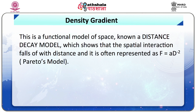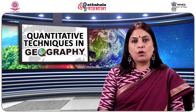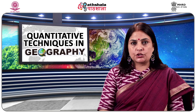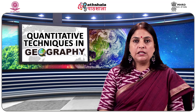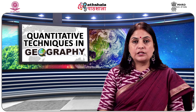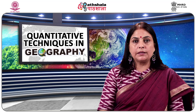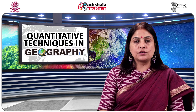The distance decay model shows that spatial interaction falls off with distance. It is represented as f = a·d⁻², as presented in Pareto's model, where f shows the interaction between two places and d shows the distance between them. The negative exponent of 2 shows an inverse relationship between interaction and distance. In general, distance decay is a geographical term which describes the increasing effects of distance on economic, cultural and spatial interactions between places.